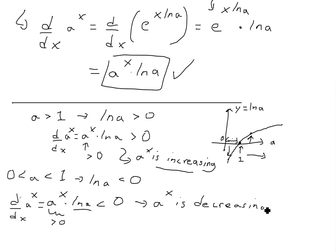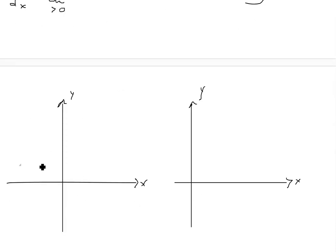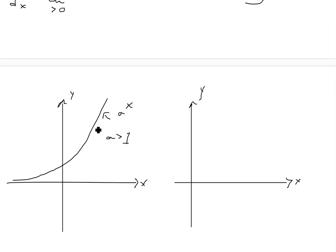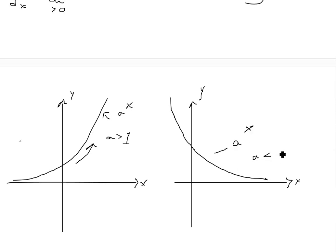So if you were to graph these: for the case where a is greater than 1, a to the x looks like an increasing function. But when a is less than 1 and greater than 0, you have a decreasing function — this is a to the x when a is between 0 and 1, and as you can see it is basically decreasing.